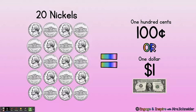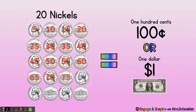Twenty nickels — let's count by fives and find out how much twenty nickels equals: five, ten, fifteen, twenty, twenty-five, thirty, thirty-five, forty, forty-five, fifty, fifty-five, sixty, sixty-five, seventy, seventy-five, eighty, eighty-five, ninety-five, one hundred. So twenty nickels equals one hundred cents or one dollar. One hundred cents is the same as one dollar, so if I had twenty nickels I could trade it for a one dollar bill.